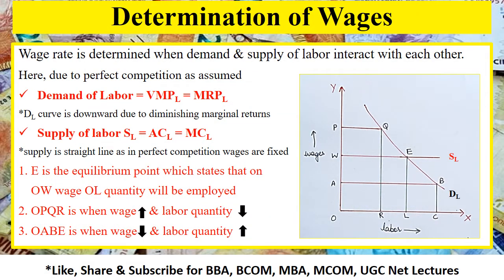Now let's determine the wage rate using this theory of marginal productivity of labor. The wage rate is determined when demand and supply interact with each other. Here, demand of labor is based on the value of the labor. So in this case the demand is the value of marginal product of labor, that is VMPL. Under the assumption of perfect competition, the demand of labor equals VMPL equals MRPL. So the demand curve will be downward sloping.